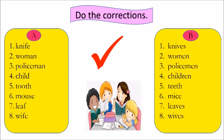Now check your answers: knife → knives, woman → women, policeman → policemen, child → children, tooth → teeth, mouse → mice, leaf → leaves, wife → wives.